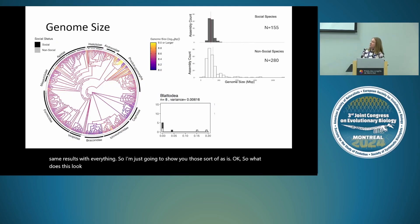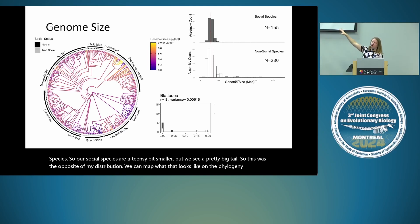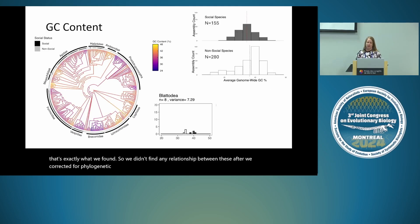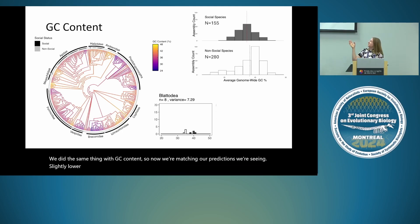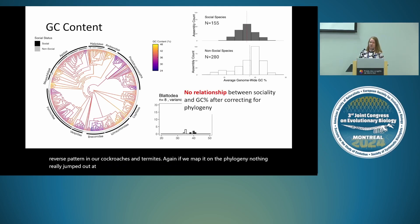Starting with genome size: social species are a tiny bit smaller, but with a pretty big tail — the opposite direction from our prediction. After correcting for phylogenetic history, we didn't find any relationship between sociality and genome size. We did the same thing with GC content: we see slightly lower GC content in social species, matching our predictions, and the reverse pattern in cockroaches and termites. But again, after correcting for phylogenetic history, there is no relationship.